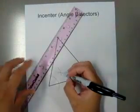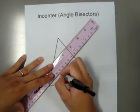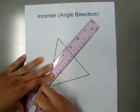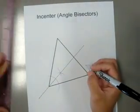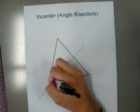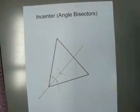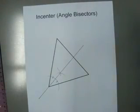Once I find my X, I use that to line up with my vertex, and I draw my first angle bisector. I know that it's an angle bisector because I'll make tick marks there to indicate that it's an angle bisector.